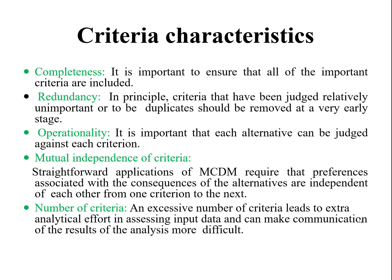The first characteristic of criteria is completeness. Completeness means it is important to ensure that all important criteria are included. For example, when buying a car you need to include all important criteria such as cost, resale value, mileage, spare parts, CO2 emission, etc. If you miss one specific important criterion, the whole decision process will be useless.